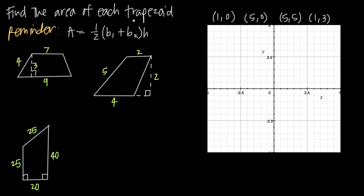What do we mean by trapezoid? We're talking about a four-sided figure, so it's a quadrilateral, and two of the sides of a trapezoid are always parallel. The other two sides are not parallel. So if we look at this first example, these two sides are parallel with one another, and these two slanted sides are not parallel. A trapezoid has two parallel sides and two non-parallel sides, and the way we find the area is by adding the lengths of the bases together.